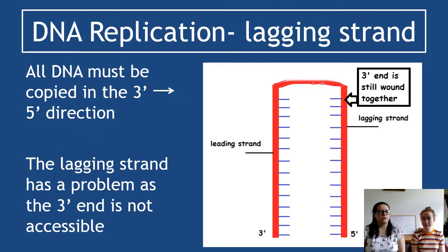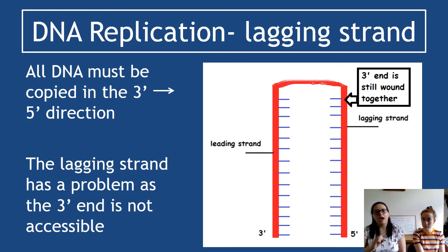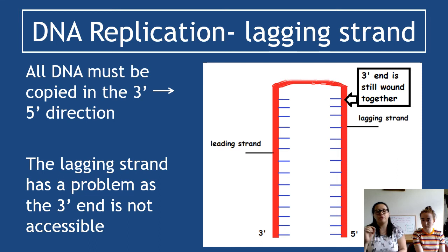Now for the lagging strand. With the leading strand replicated, the lagging strand would be left by itself. There's a problem: DNA must be replicated from 3' to 5', but on the lagging strand the 3' end is still wound together — imagine a chromosome separated at the bottom but the top still joined in the double helix. That 3' end is inaccessible. This does not mean we disobey biology and replicate 5' to 3', because that's not possible.